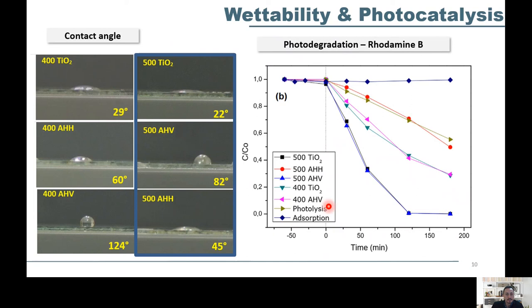It's noteworthy that the sample of titanium dioxide at 500 degrees modified with vinyl agent presented photodegradation results similar to those of pure titanium dioxide, as shown here in blue, which is very desirable.